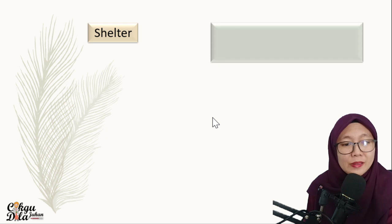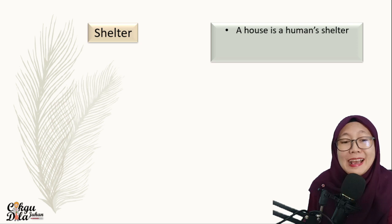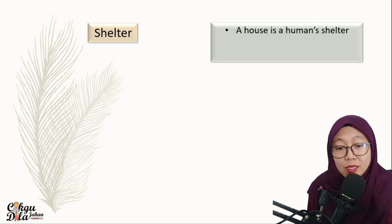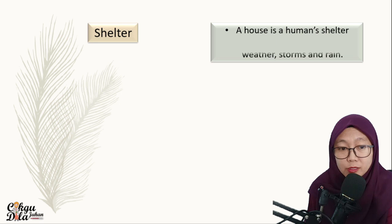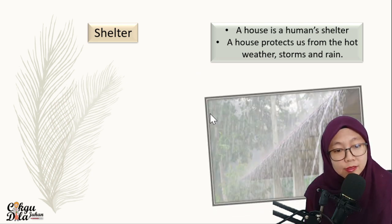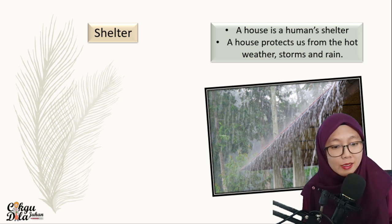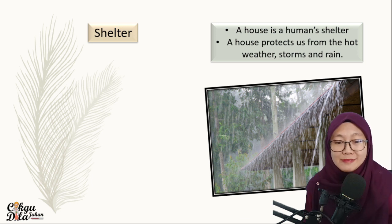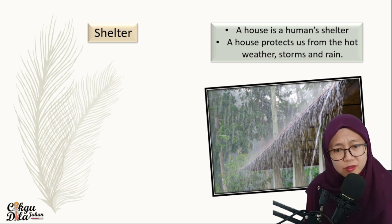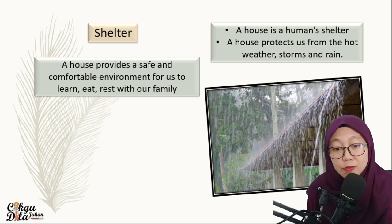Shelter. Why is shelter important? A house is a human shelter — we all have a house, and that is our shelter. A house protects us from hot weather, storms and rain. During rain, you stay inside the house — if you play outside, you might get fever. A house provides a safe and comfortable environment for us to learn, eat and rest with our family.